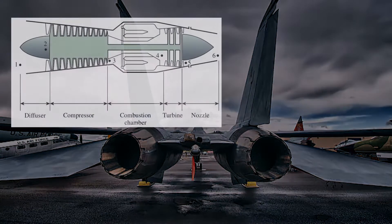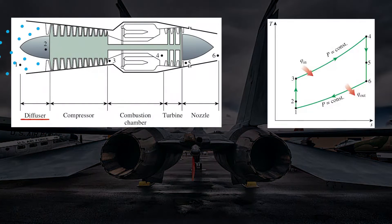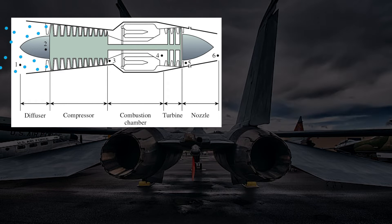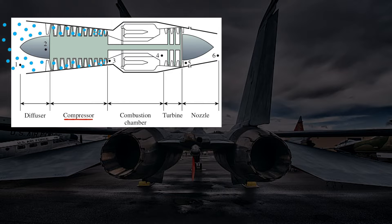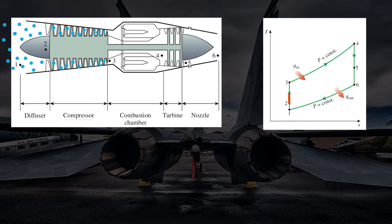First, air cycles through a diffuser and is decelerated while its pressure increases. In the second stage, air enters the compressor where it is compressed almost isentropically.